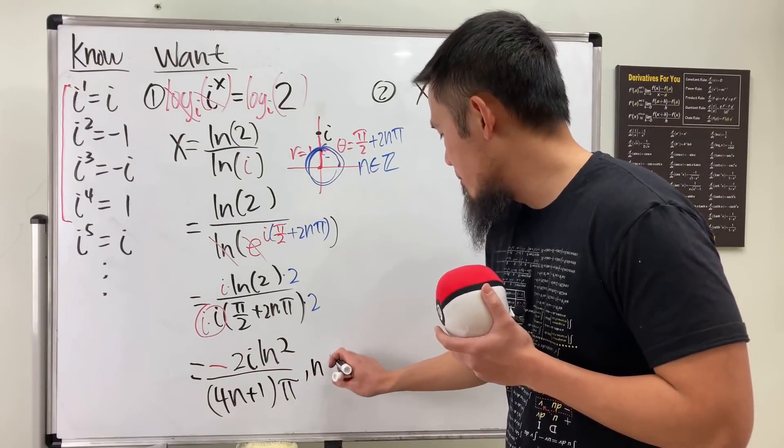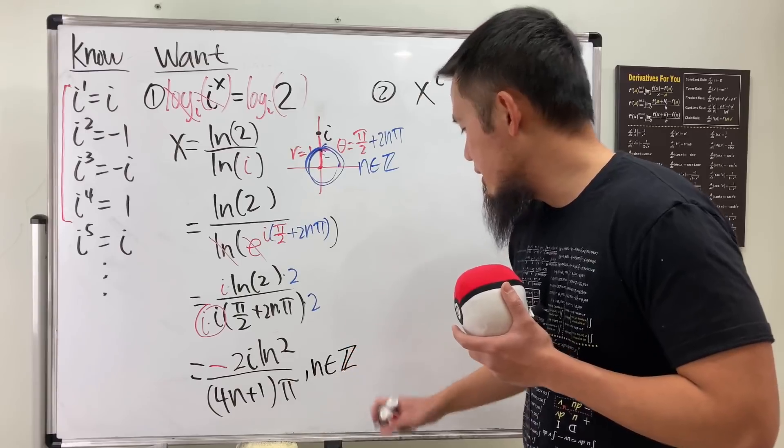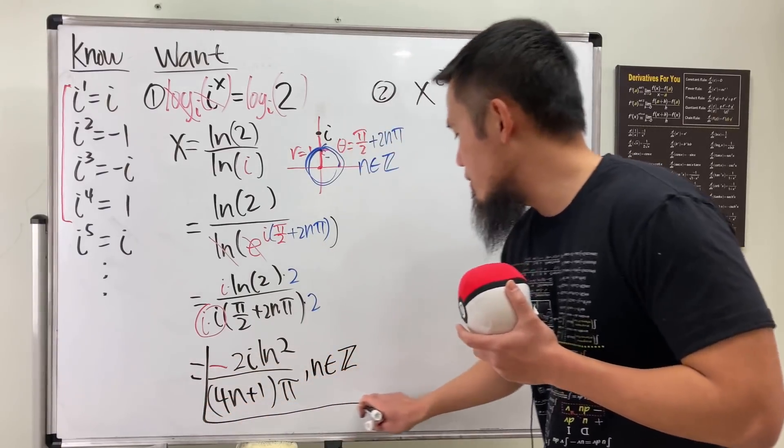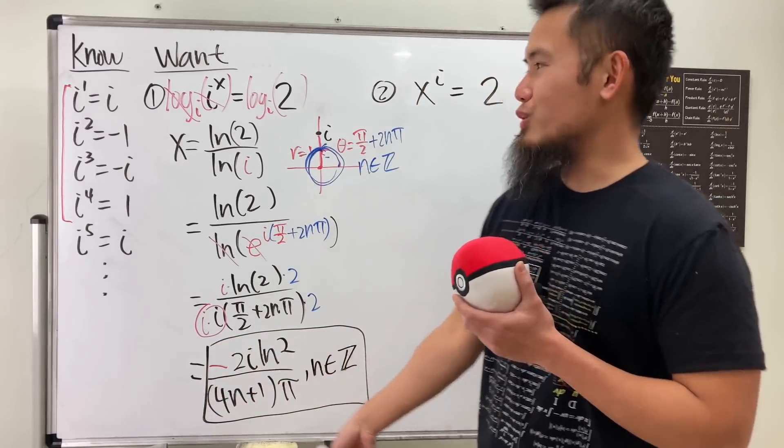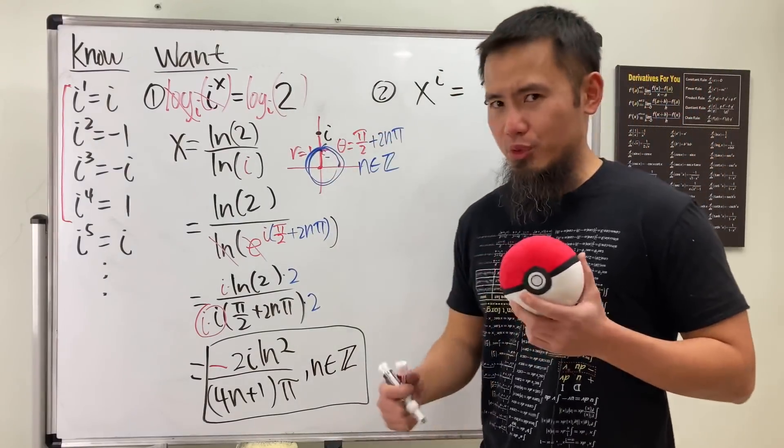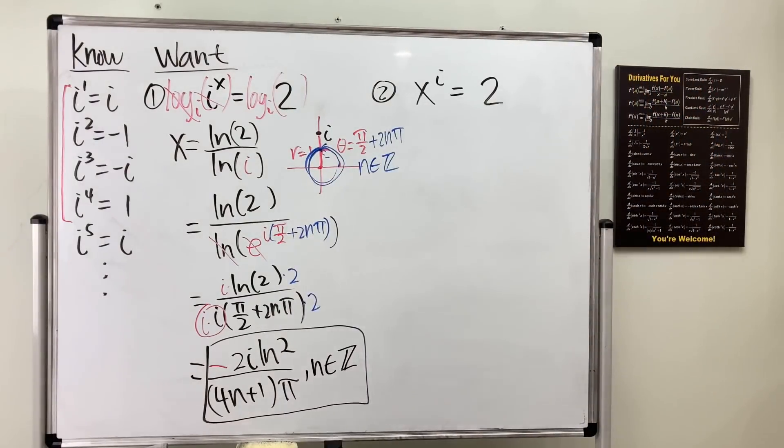Yeah, that's it. And again, maybe you want to denote that n is just an integer. So this right here will give you all the solutions for that equation, which is really cool.